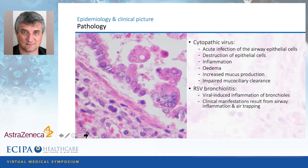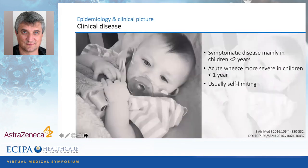If RSV infects the lower airway — the bronchioles — these are tiny, small airways. It will result in airway obstruction and air trapping. This is why these patients often present with respiratory distress. It's not because of bronchoconstriction — it's because of injury to the inner lining of the airway that they present with respiratory distress.